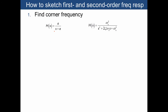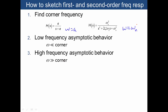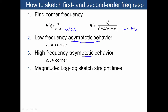A summary of the procedure: for a first order system, find the corner frequency, which is omega equals a. For a second order system, the corner frequency is omega n. The first step is to find the corner frequency, then look at what happens for low and high frequency behaviors — asymptotes that occur well below or well above the corner frequency. We then plot the magnitude on a log-log plot of log magnitude versus log frequency, and these asymptotes appear as straight lines on that plot.